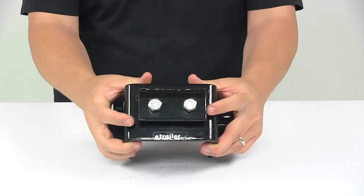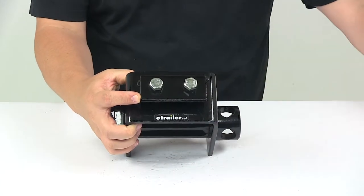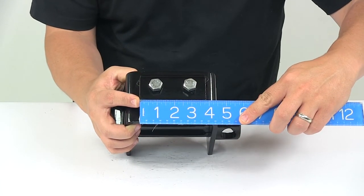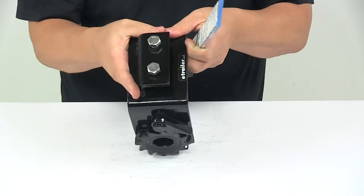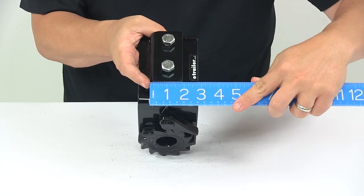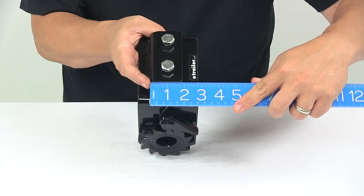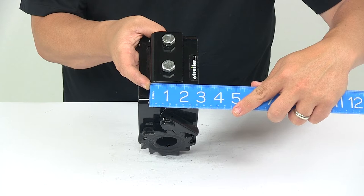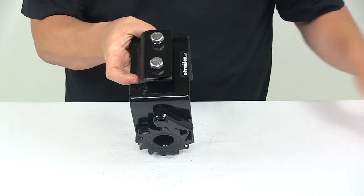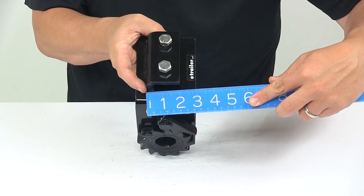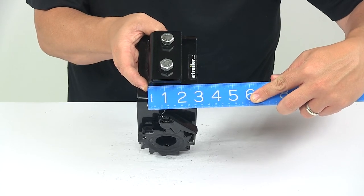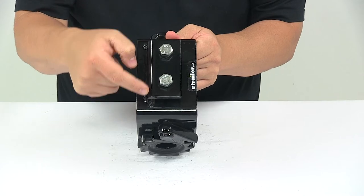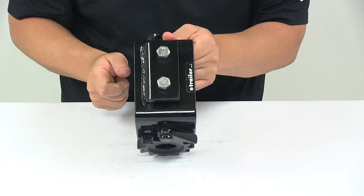The mounting bracket right here on top, edge to edge, measures three and seven eighths of an inch wide by about two inches long. If the two inch measurement is measured from the bottom of the base bracket to the edge of the base is two inches. But if you measure from right here at the curve to the front of the bracket, that's about one and seven eighths of an inch long.